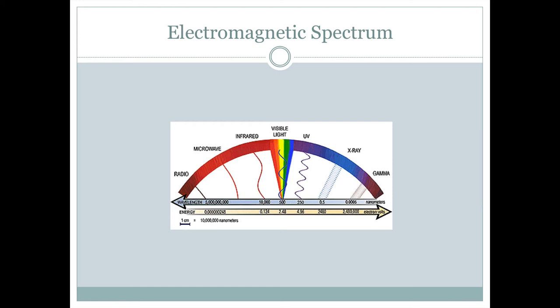A key topic for this class is going to be understanding the electromagnetic spectrum. And we'll go through this in detail, but just to give you an idea, the electromagnetic spectrum includes all this electromagnetic energy that can move through space, things like radio waves and microwaves at the longer wavelengths, and x-rays and gamma rays at the shorter wavelengths.